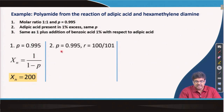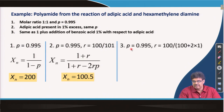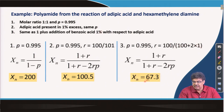In the second case, p = 0.995 and R = 100/101 (1% excess monomer), giving X_n ≈ 100.5. In the third case, p = 0.995 and R = 100 / (100 + 2×1), accounting for the 1% excess monofunctional chain stopper, which gives X_n ≈ 67.3.